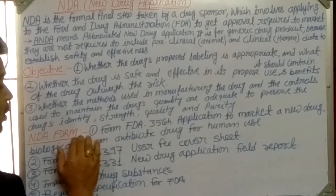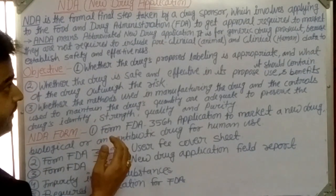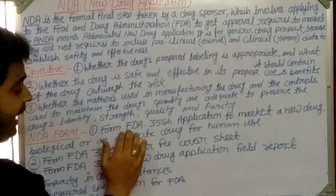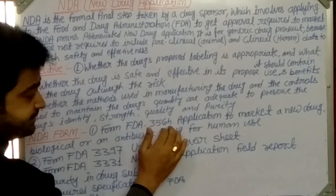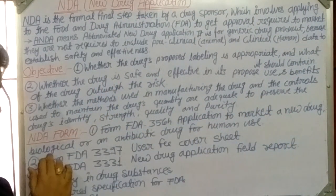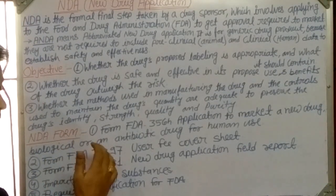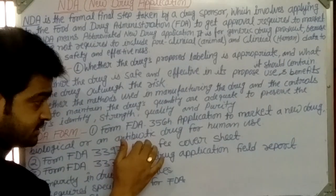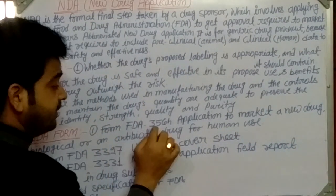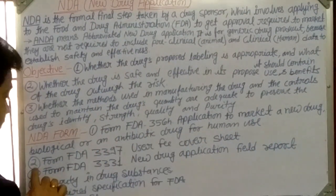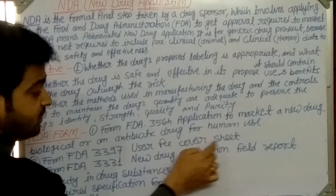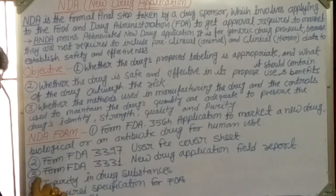Regarding the documentation required for NDA filing, the sponsor must complete several forms. Form FDA 356H is the application form to market a new drug, biological product, vaccine, sera, antibiotics, or other products for human use. The second form is FDA 3397, which is the user fee cover sheet that must be compiled along with the application.